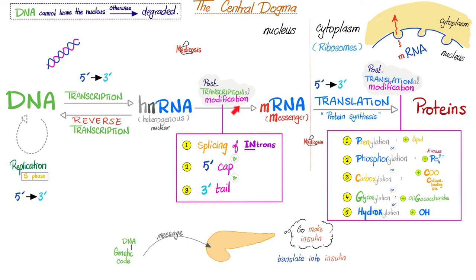The post-transcription modification includes splicing of the introns — the intervening particles, throw them into the trash — and then adding a cap at the 5' end and a tail at the 3' end. Can someone tell me what was the name of the cap and what was the name of the tail? Comment below.